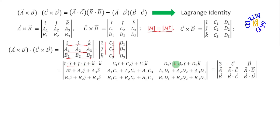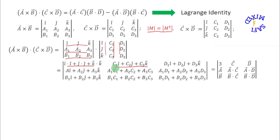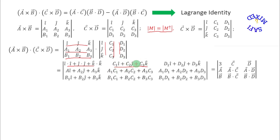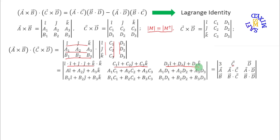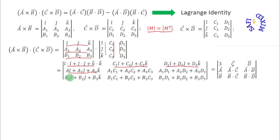Similarly, if I look carefully at the next element, it is c1 times unit vector i, c2 times unit vector j, and c3 times unit vector k — which means this is vector c. I write this as vector c, and similarly I write vector d, vector d, vector a, vector a, and vector b at their corresponding positions.